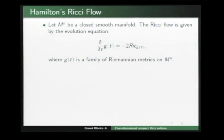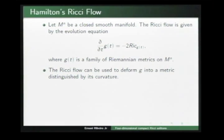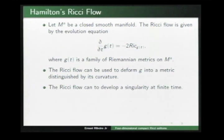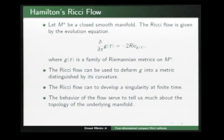In 1982, Hamilton introduced the concept of Ricci flow by the following evolution equation. In certain viewpoints, we may consider the Ricci curvature as the Laplacian of the metric plus lower-order terms, and we can see this equation as a heat equation. The Ricci flow can be used to deform the metric into one distinguished by its curvature, and the Ricci flow can develop singularities at finite time. The behavior of the flow serves to tell much about the topology of the underlying manifold.